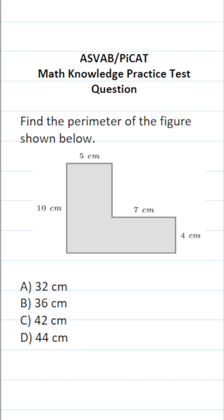This math knowledge practice test question for the ASVAB and PICAT says, find the perimeter of the figure shown below. So as it happens, we're looking at a composite figure, which is nothing more than a figure that is made of a combination of two or more simpler shapes. That said, let's talk about finding the perimeter.